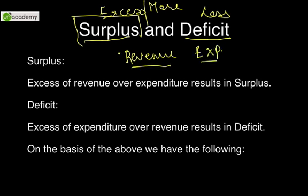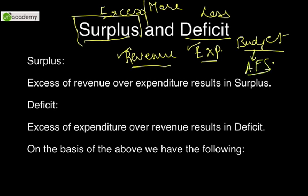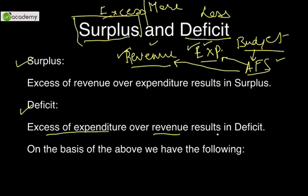On the last working day of February every single year, the government declares a document loosely known as budget. As per the constitution, the same document is known as the annual financial statement. What we quote in the annual financial statement are the expenditures as well as the revenues. If the revenue is in excess of expenditure, it is known as surplus. But if the expenditure is in excess of revenue, it is known as deficit — excess of expenditure over revenue results in deficit.